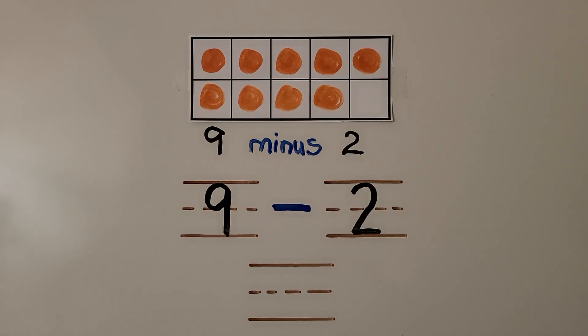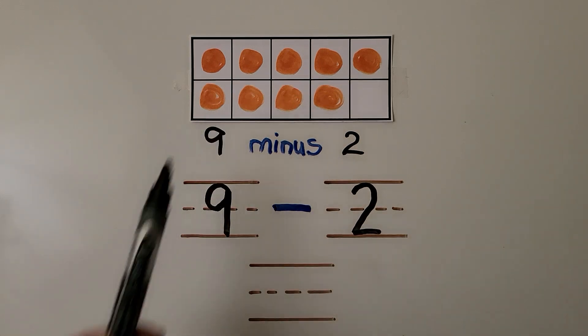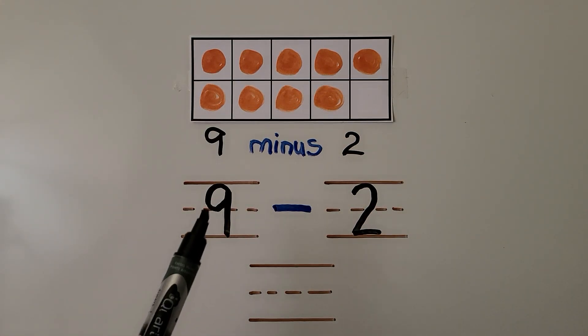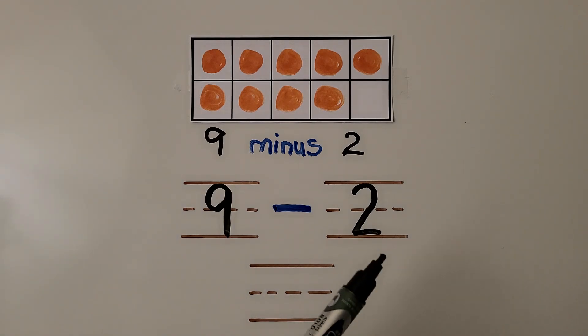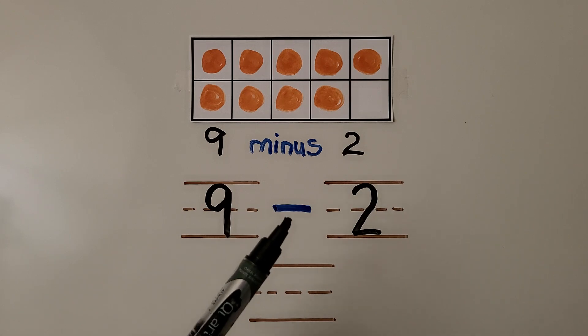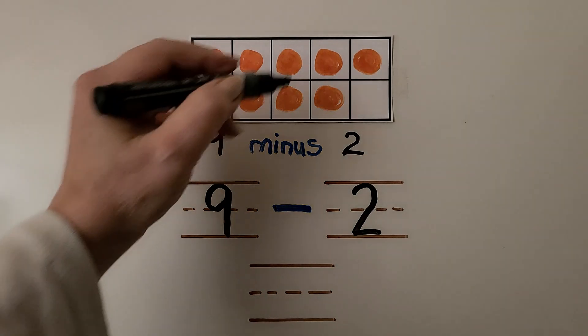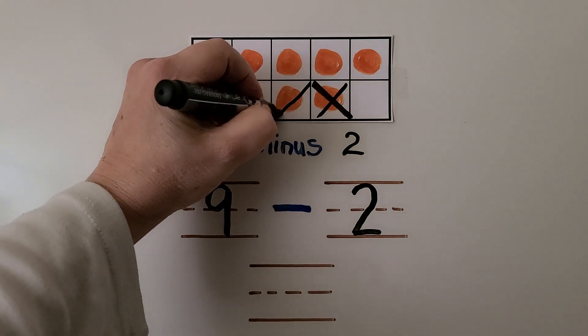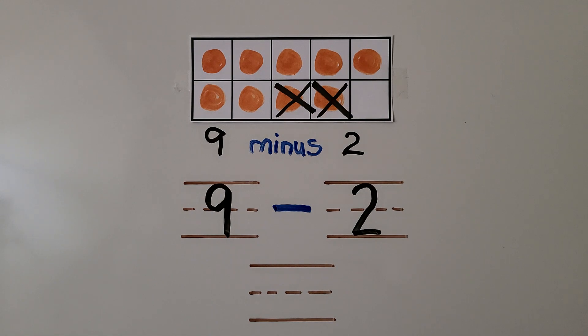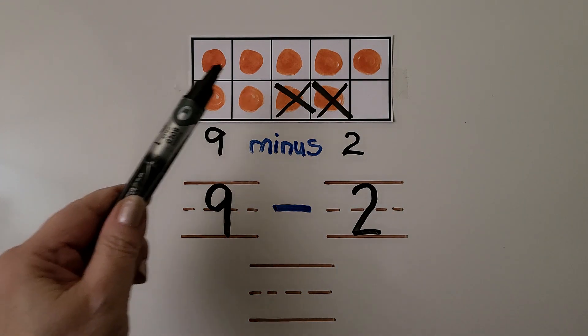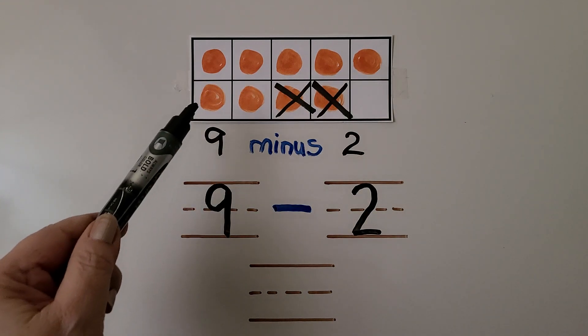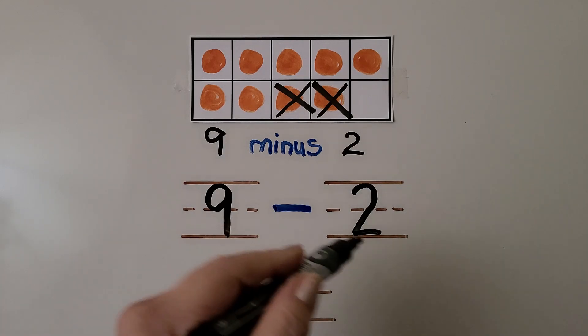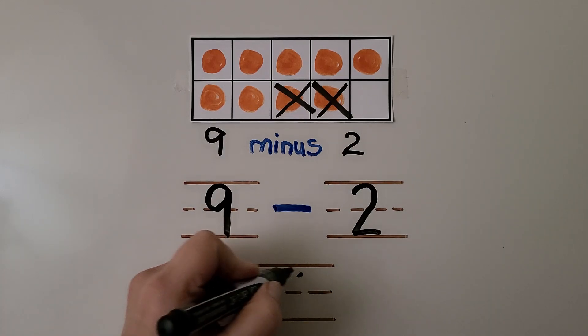Here we have a ten frame with 9 counters. We can find 9 minus 2 by crossing out 2 counters. 9 minus 2 means we have 9 and we need to take away 2. We'll cross off 1, 2. Then we count how many are left. We have 5, 6, 7. 9 minus 2 is 7.